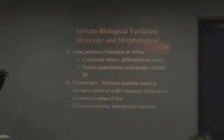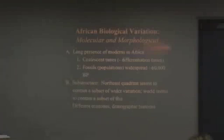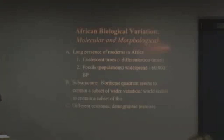There are other studies done with dental work, discussing the tropical body plan. When you talk about the state of our current knowledge, we have to understand there's a long presence of modern people in Africa. The coalescence times — the times at which you get to a common ancestor for many molecules — is so old that it generally places many of them in Africa. We have fossils in Algeria at 60,000 years BP, but other fossils dated to essentially modern humans around 190,000 years ago. The Northeast quadrant of Africa seems to contain a subset of wider variation in Africa, and maybe the rest of the world contains a subset of this. In Africa you have different ecozones, different demographic histories, and therefore we should expect a large amount of variability.